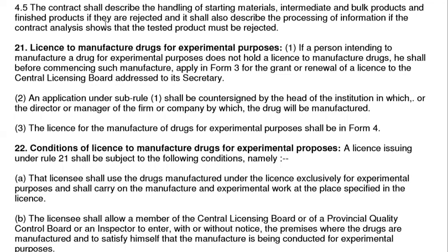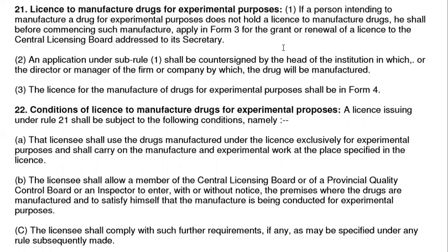The license for manufacturing of the drug for experimental purposes: If a person intends to manufacture a product for experimental purposes and does not hold a manufacturing license, they shall, before commencing such manufacturing, apply in Form 3 for the grant or renewal of the license to the Central Licensing Board addressed to the Secretary. An application under sub-rule 1 shall be countersigned by the head of the institution, or the director or manager of the firm or company by which the drug shall be manufactured.